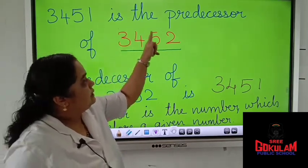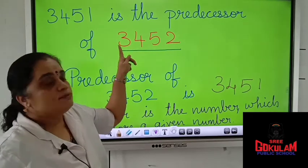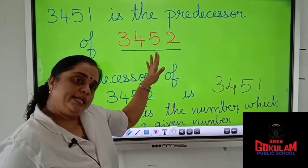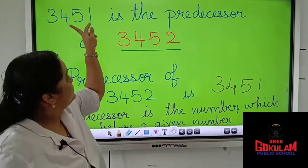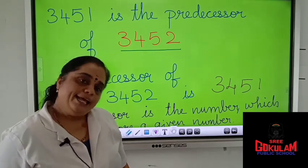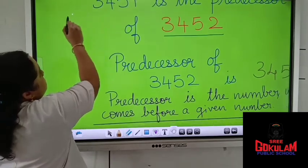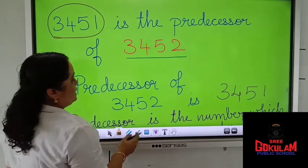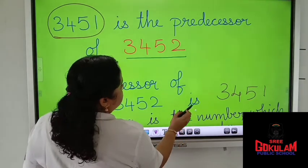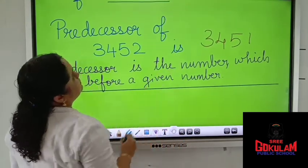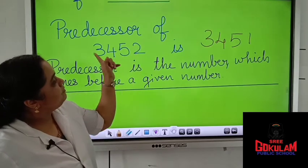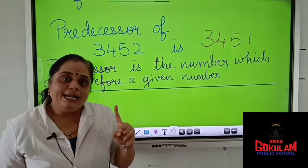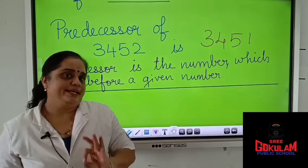3,451 is the predecessor of 3,452. That is, 3,452 is the given number. Before this, which number will come? Yes, 3,451. So, this is the predecessor of 3,452. Predecessor of 3,452 is 3,451. Always, predecessor is one number less than the given number.